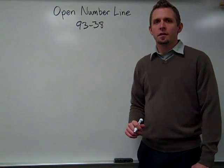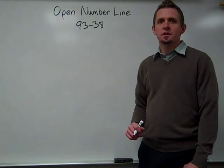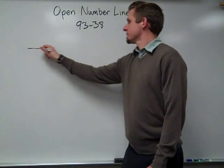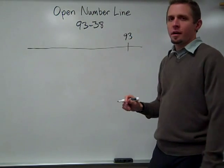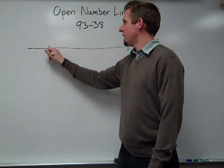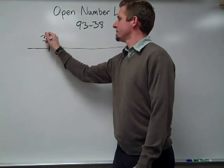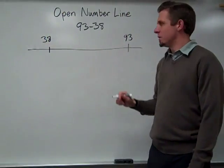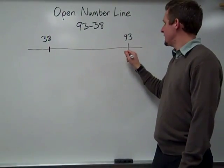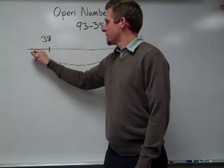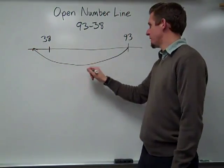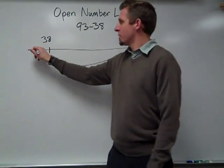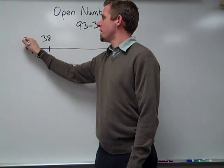This is what 93 minus 38 might look like using an open number line. So I'm going to start at 93 and I want to end at 38. One thing I could do is I could subtract 60 from 93. So I'm going down, but I overshoot a little bit. I took away 60 and that got me to 33. That was a little too far.